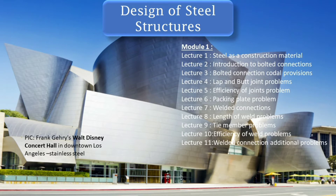In this video I will be covering Module 1 of Design of Steel Structures. Module 1 comprises the introduction to steel constructions, introduction to bolt connections and welded connections, problems regarding lap joint, butt joint, the length of weld, and finally the efficiency of connections. This module is divided into 11 lectures.